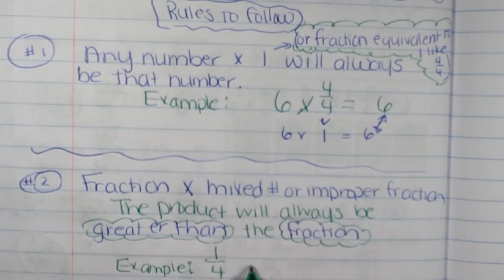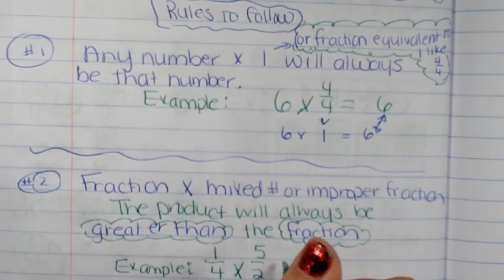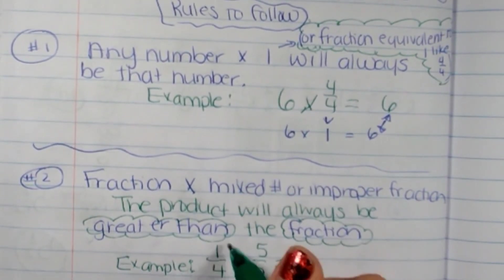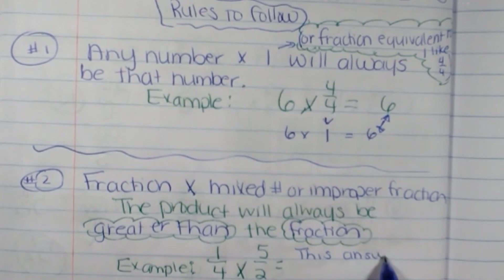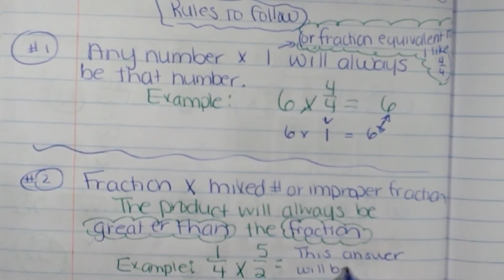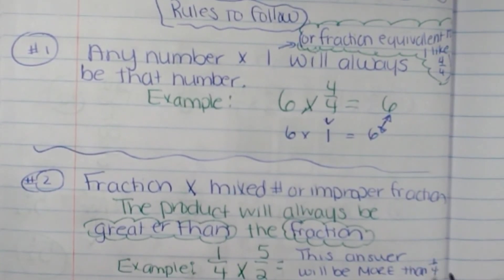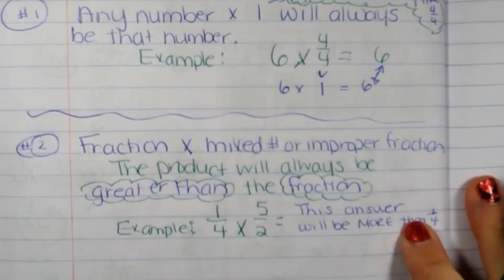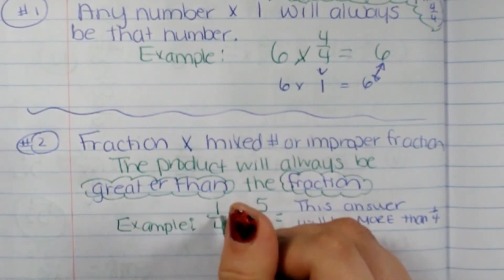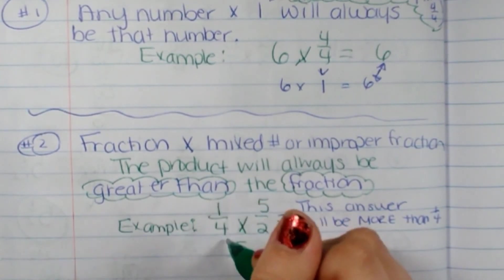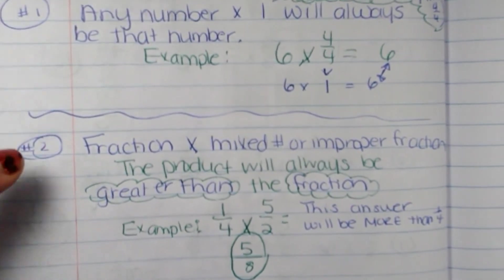One-fourth times five-halves, or this would be two-and-a-half. This is going to end up being more than a quarter or one-fourth. Now when we multiply this across, it would be five-eighths. Now five-eighths is more than one-fourth because if I do an equivalent fraction, it would be two-eighths. So five-eighths is more than one-fourth.